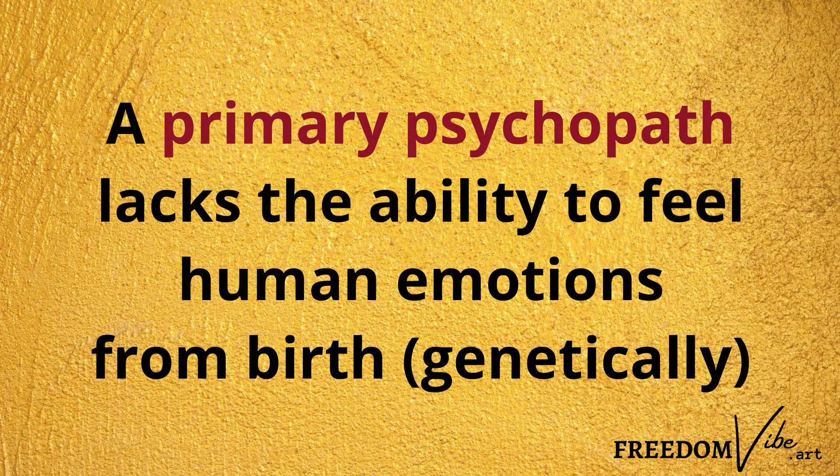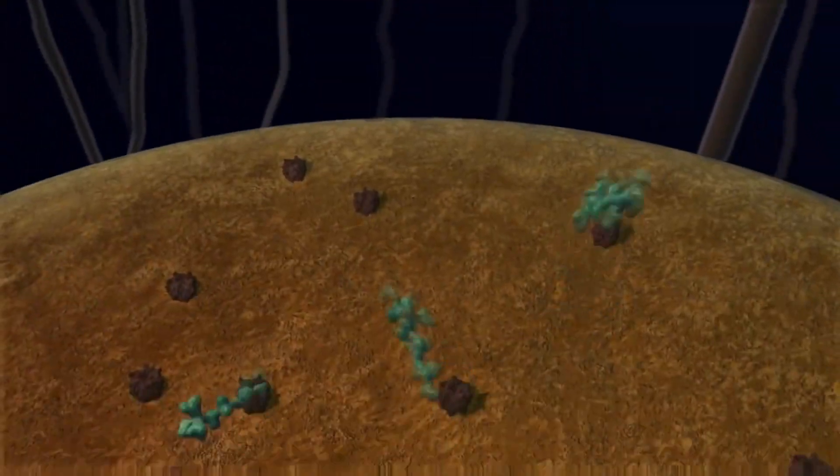A primary psychopath is someone who was born unable to feel those emotions. It's a genetically driven defect in their brain — specifically in the midbrain, what's called the mammalian brain — which would normally generate the neuropeptides that flow through the body and are experienced as these different emotions. The body lacks the mechanism to create those neuropeptides, which tell the body to react and respond in certain ways based on their actions. They simply do not have that ability from birth.